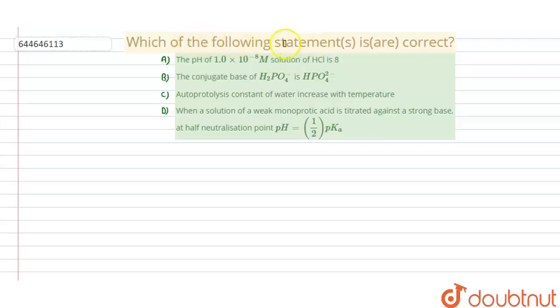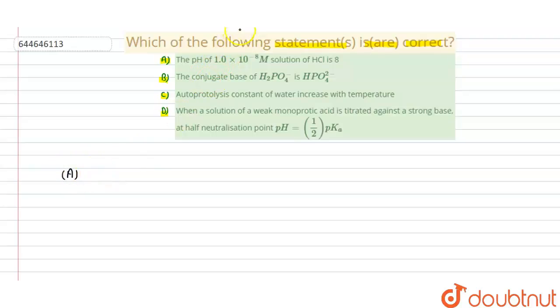Hello students. The given problem asks: which of the following statements is or are correct? There are options A, B, C, and D. We will solve each option one by one and check which of them is true.